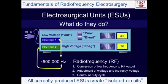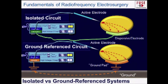All generators have an isolated circuit. There probably hasn't been a ground-referenced generator sold in this country for operating room use for 30 or 40 years. In a ground-referenced circuit, the pad is not connected to the generator — the circuit completes through the ground. But all generators you use today have a direct connection to the generator. These are isolated circuits, and these are not grounding pads — they are dispersive electrodes.